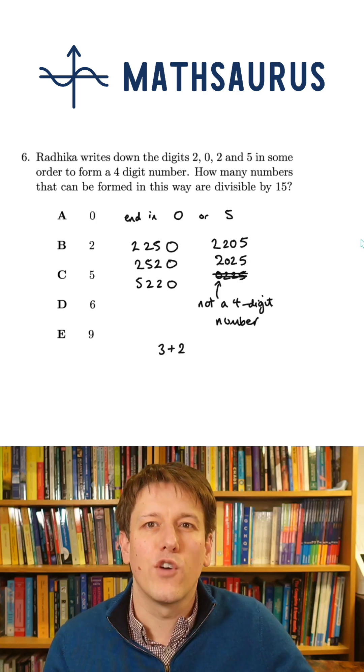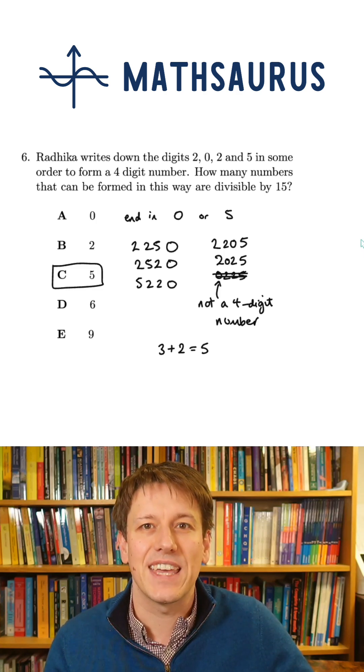So the total number of options here that are multiples of 15 is 3 plus 2, which is 5, and the answer here is C.